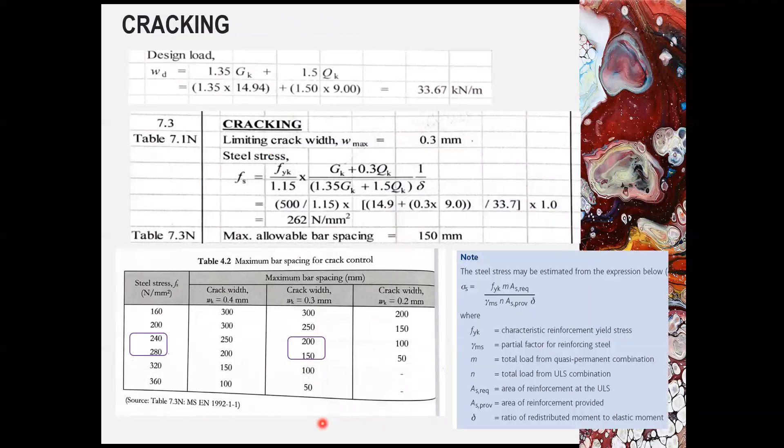Now we will proceed on the cracking check. In this cracking check, we need to first determine the steel stress. The steel stress can be obtained or estimated using the expression here. If you look at the M, the M is the total load from the quasi-permanent combination. And the N will be the total load from the ultimate limit set combination. So it is very common to use for the domestic, the GK plus 0.3 QK as the quasi-permanent combination.